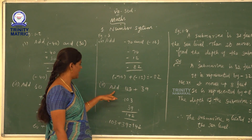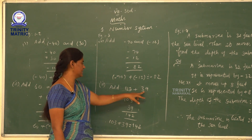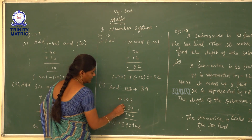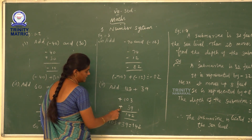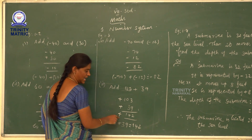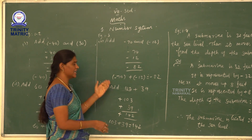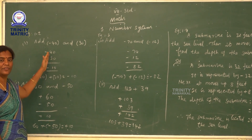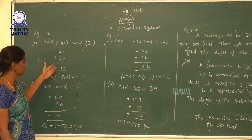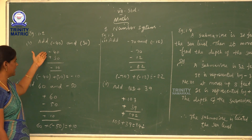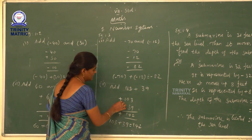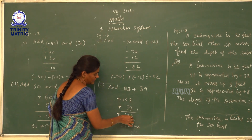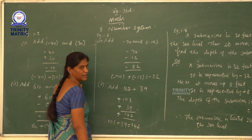Next, add 103 and 39. Both 103 and 39 are positive integers. The signs are the same, so we put the same sign — plus — in the answer. If the signs are the same, we add the integers. If the signs are different, we find the difference and put the greater number's sign. So plus 103 plus 39 equals 142.